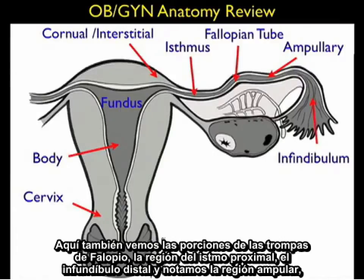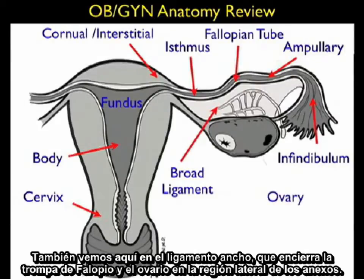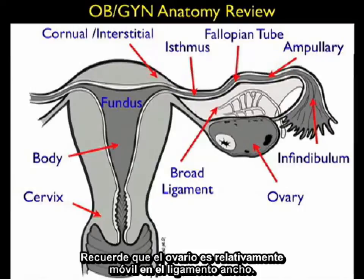Here we also see the portions of the fallopian tube: the proximal isthmal region, the distal infundibulum, and the ampullary region which comprises the majority of the fallopian tube. We also see the broad ligament, which encases the fallopian tube and ovary in the lateral region of the adnexa. Remember that the ovary is relatively mobile within the broad ligament.